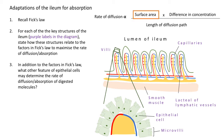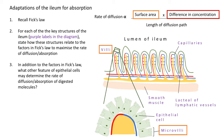Starting with surface area — we want a large surface area. How does the ilium achieve this? It has villi: protrusions from the ilium wall, which can be about a millimetre in length. Then the epithelial cells that make up the villi have microvilli — protrusions of the cell membrane. These two features together provide a large surface area.